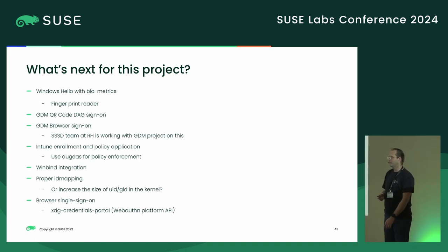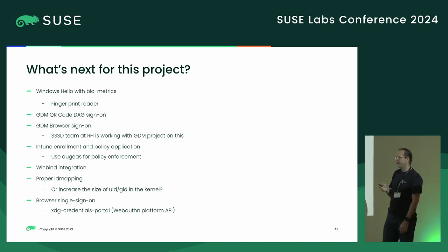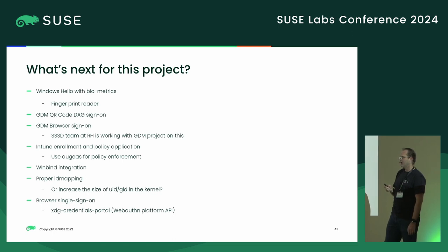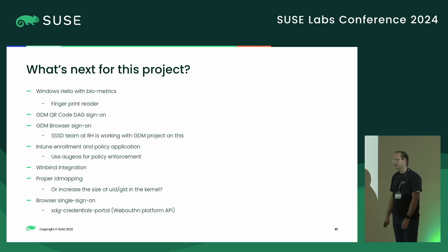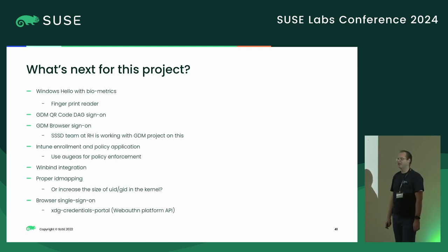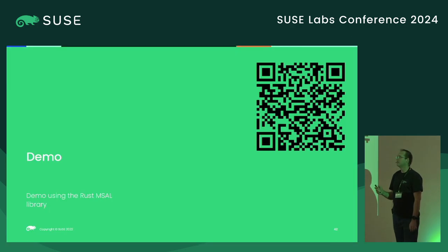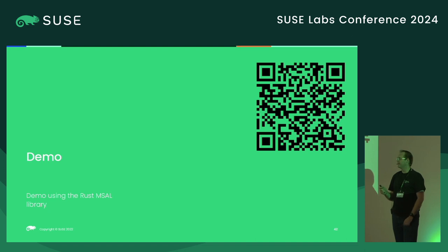The next thing is browser single sign-on. We need to get the WebAuthn platform API working — there's a project out there for that — and it needs to be added to Firefox. We're in discussions about that. I was going to do one final demo but that's not happening.